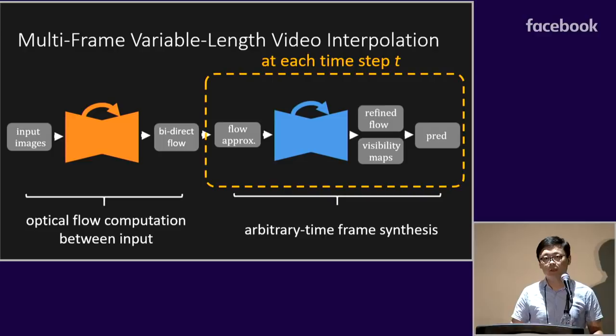Since none of the network's parameters is dependent on time step t, our approach is able to do multi-frame variable length video interpolation, generating as many intermediate frames as we want, using the same network without any modification.